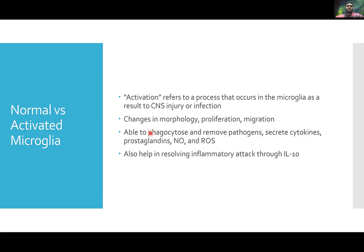One thing to note about phagocytosis: in diseases such as Parkinson's or Alzheimer's, microglial cells have been shown to be beneficial in phagocytosing and removing extracellular debris, but actually detrimental in removing intracellular or intraneuronal debris. For example, in Alzheimer's disease, these microglial cells are very good at removing beta amyloid plaques because they're extracellular.